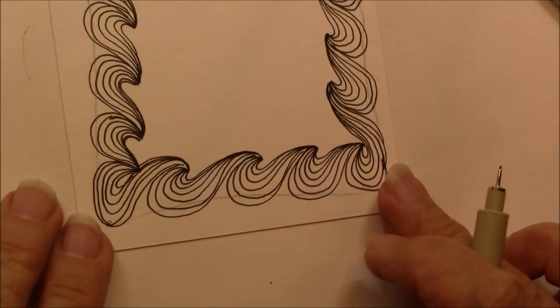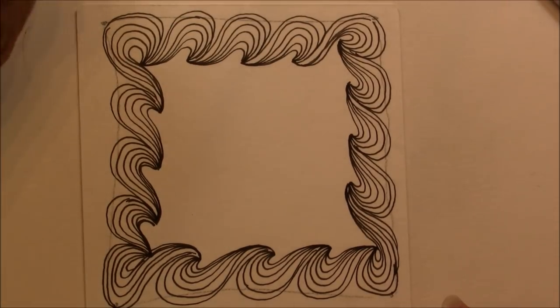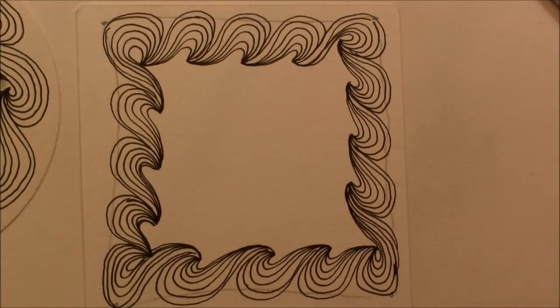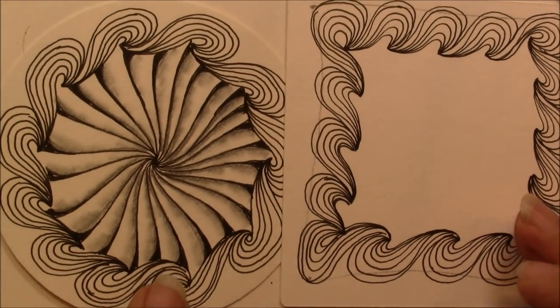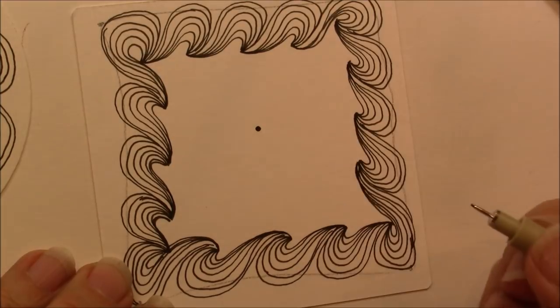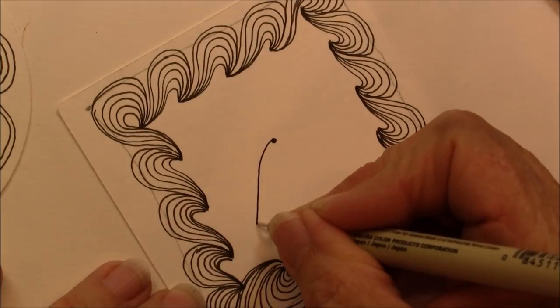And there we have Wigwag. And I'm just going to show how I did this center piece on this one, because I think it's such a beautiful little tangle to go with it. I'm just going to put a little dot in the center, that's going to be my starting point, and then I'm going to come down.